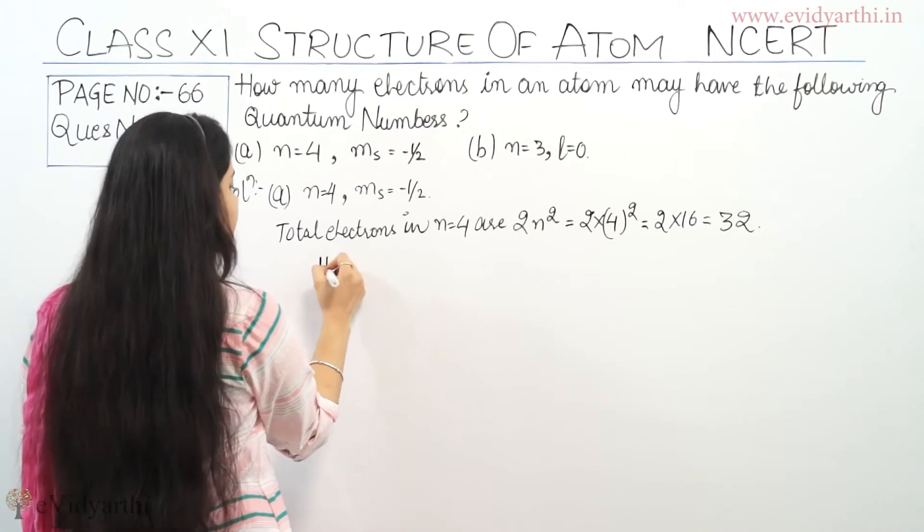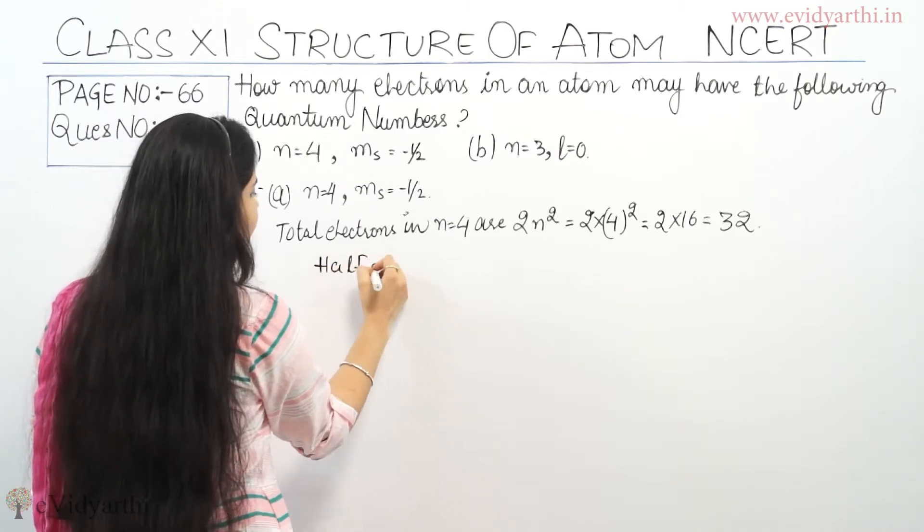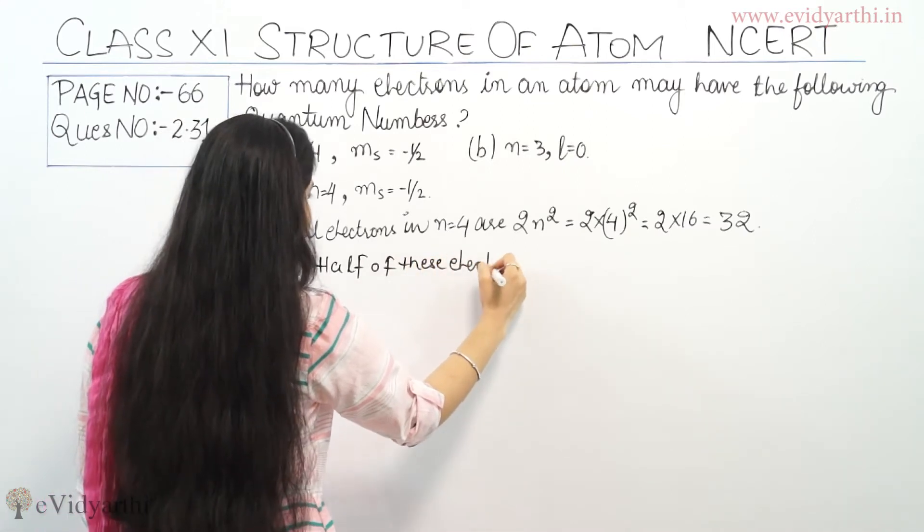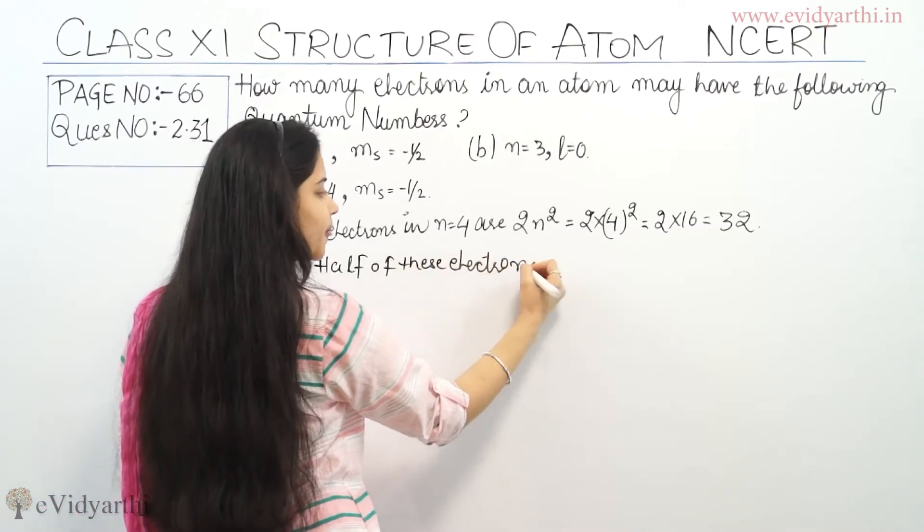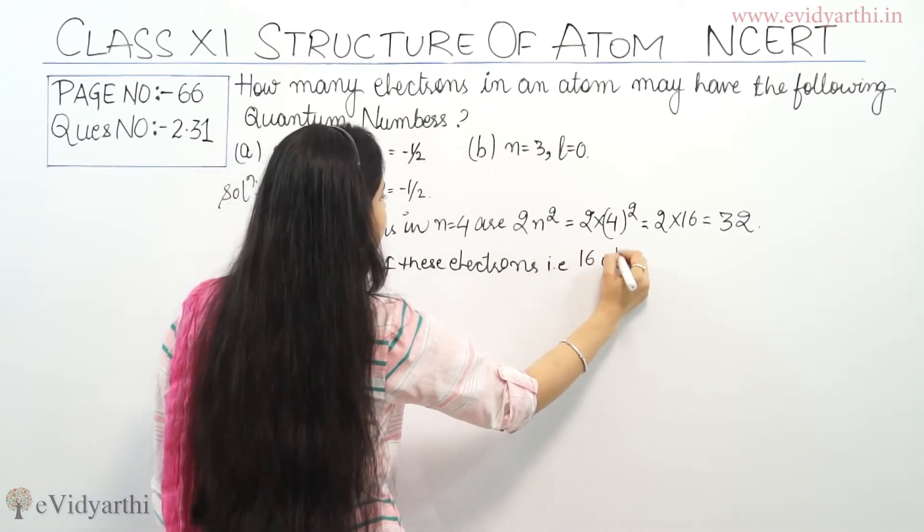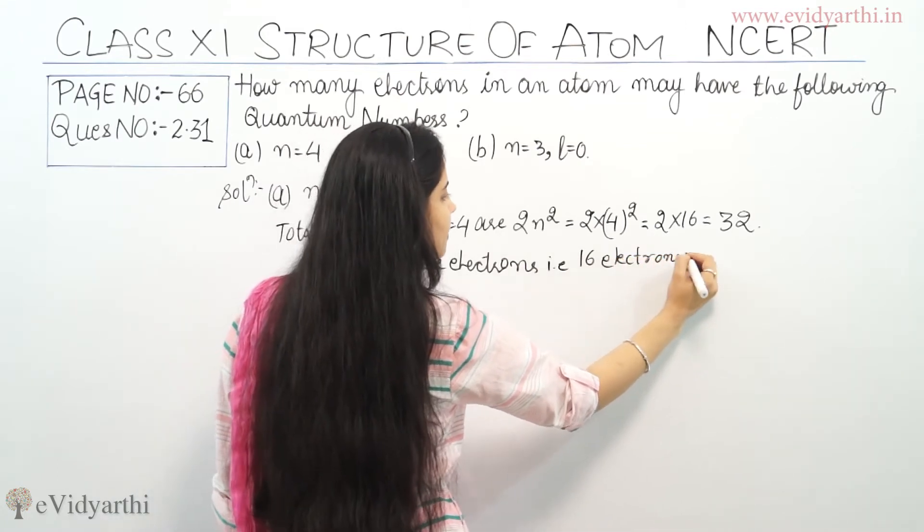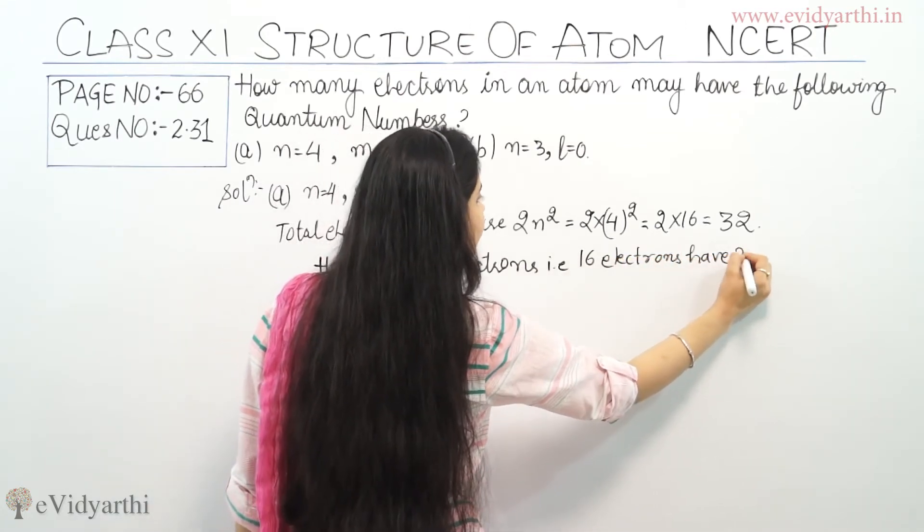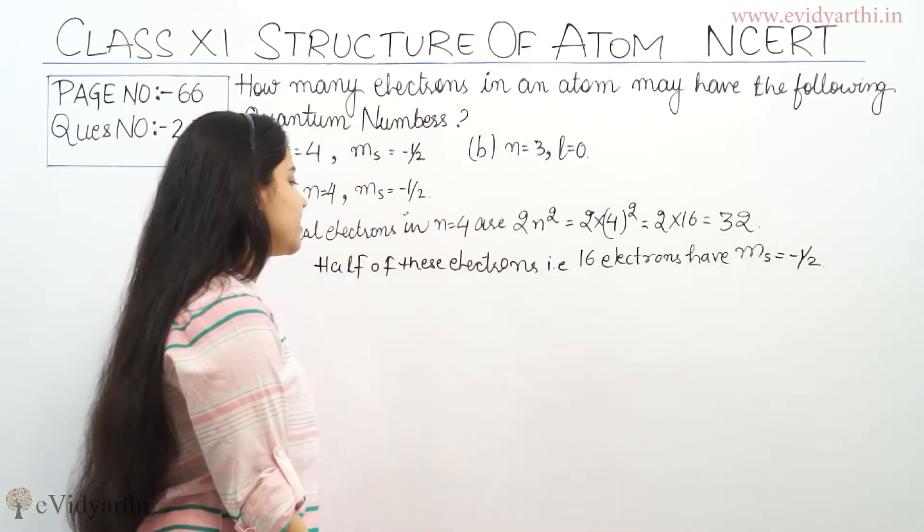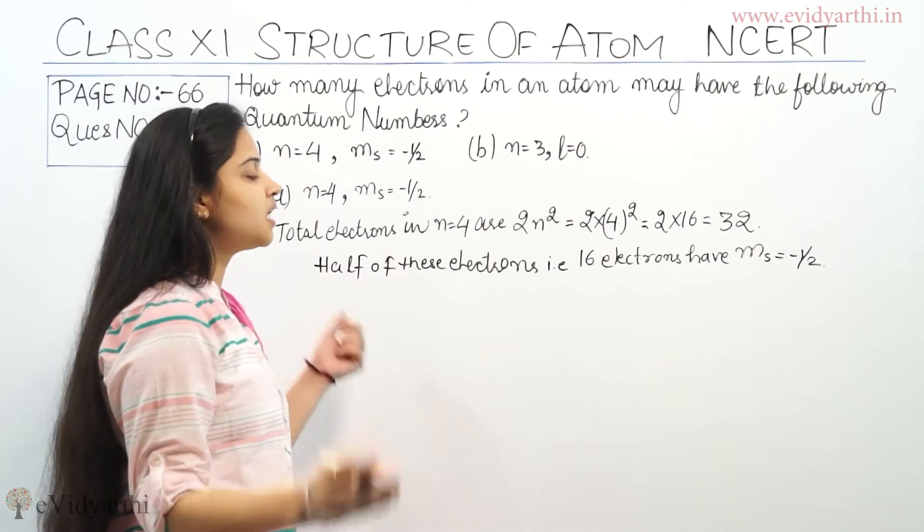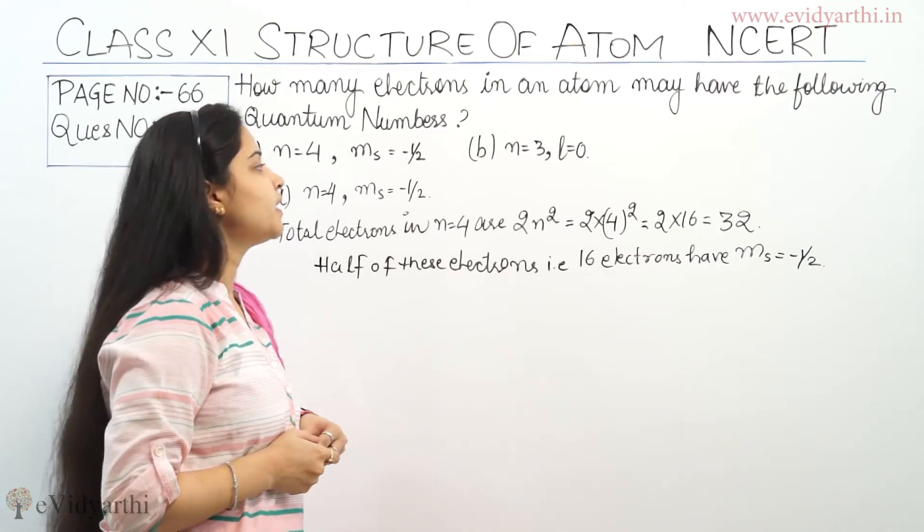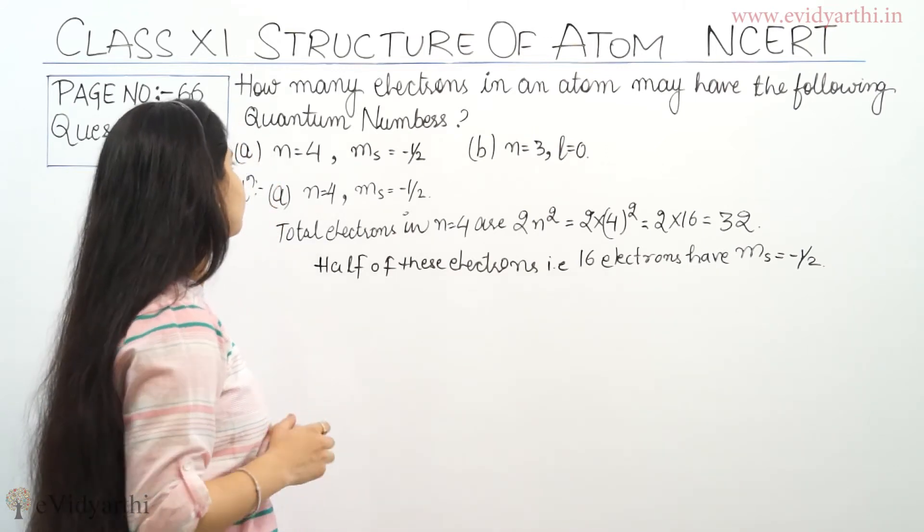Half of these electrons, that is 16 electrons, have ms equals to minus half. So this is the solution for the first question.